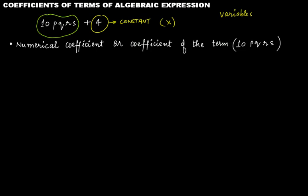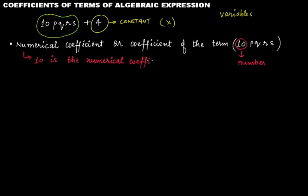In the term 10PQRS, the number 10 is actually the numerical factor, or simply the number in a given term. This number will be the numerical coefficient, or simply the coefficient, of the whole term. So 10 is the numerical coefficient of 10PQRS.